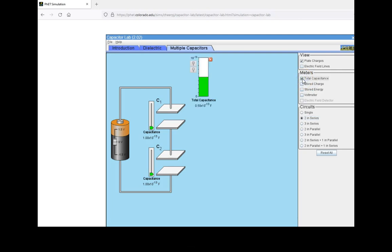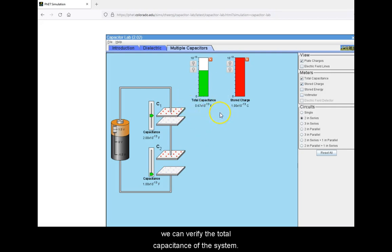Now let's check the circuit for unequal capacitances. Notice again that if you plug in the new values for capacitance into our derived equation, we can verify the total capacitance of the system.